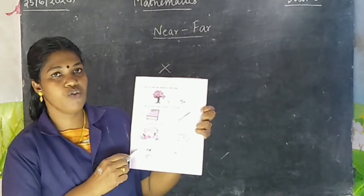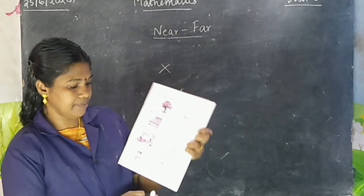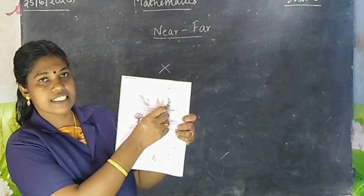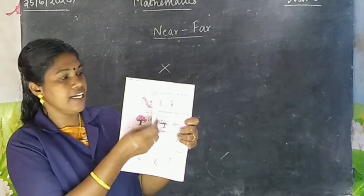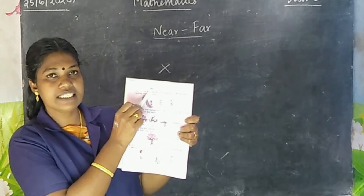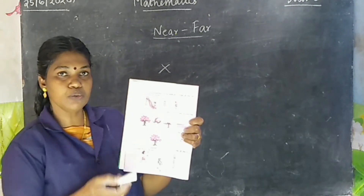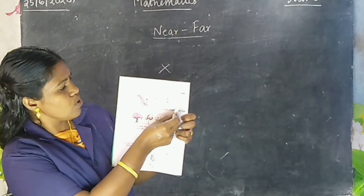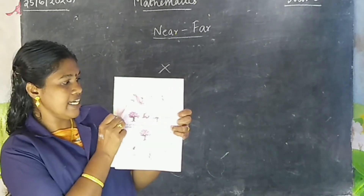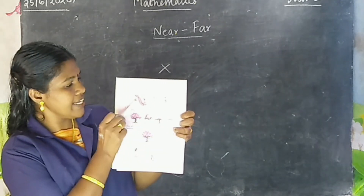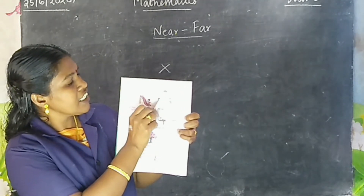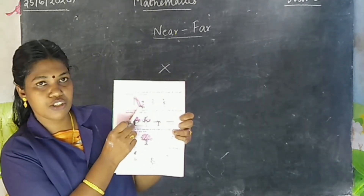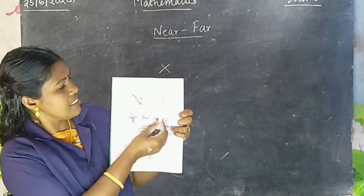Question number 3 and 4 are homework. Take next page: nearest and farthest. Nearest means e-tum adutth, farthest means e-tum dhuri. First question: tick the girl nearest to the slide and cross the girl farthest from the slide. Here a slide and three girls. This girl is nearest and this girl is farthest.